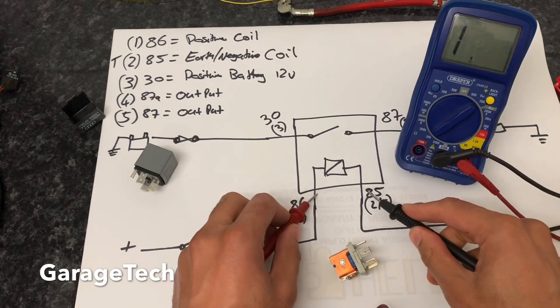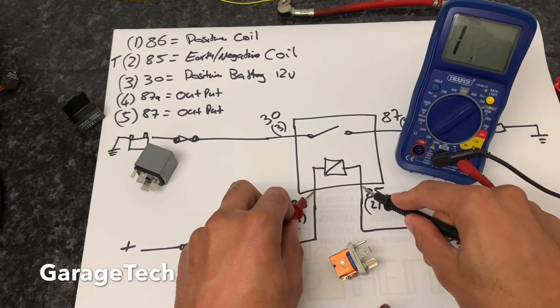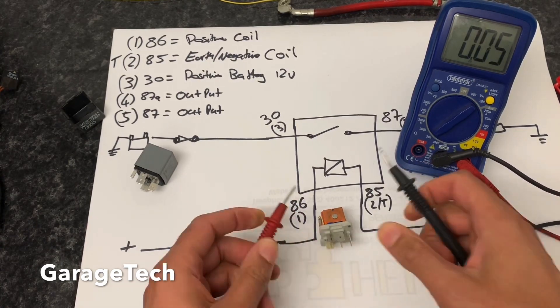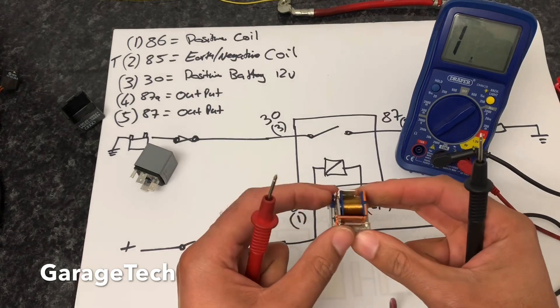Just as an example, I've just gone over those two pins there, just like that. So I know that coil winding in there is okay and it's working fine.